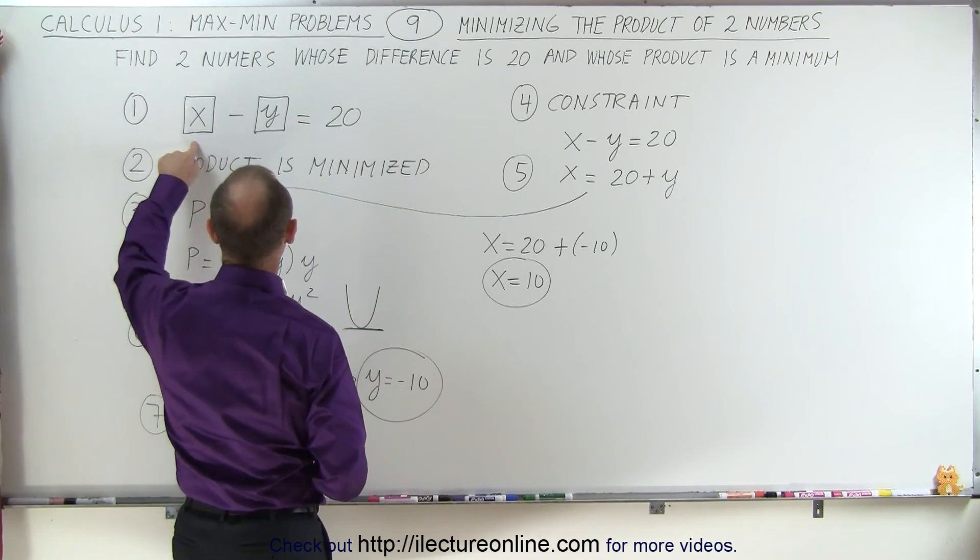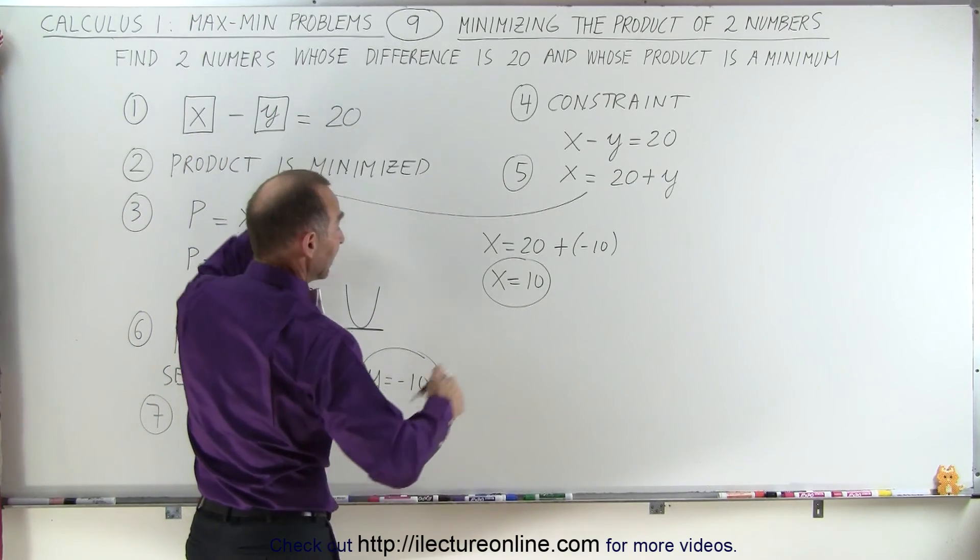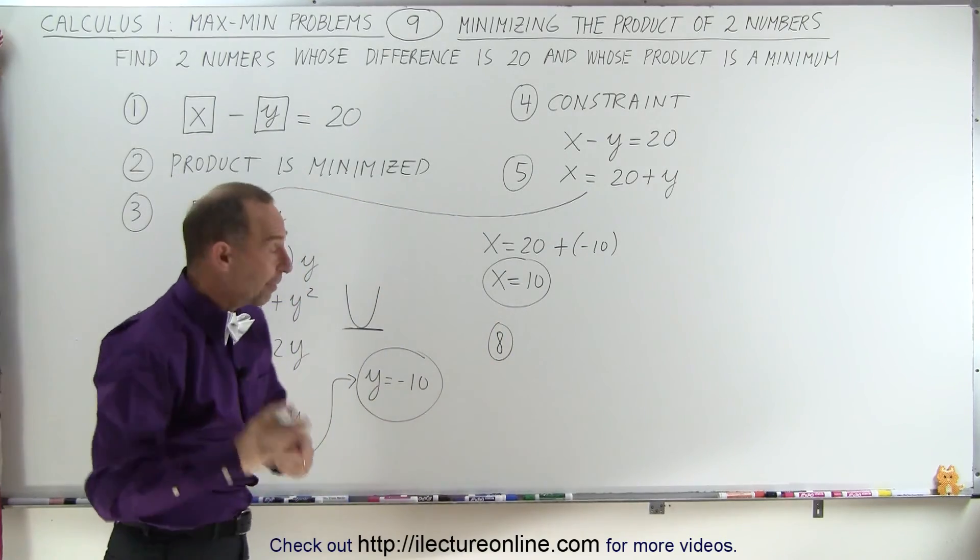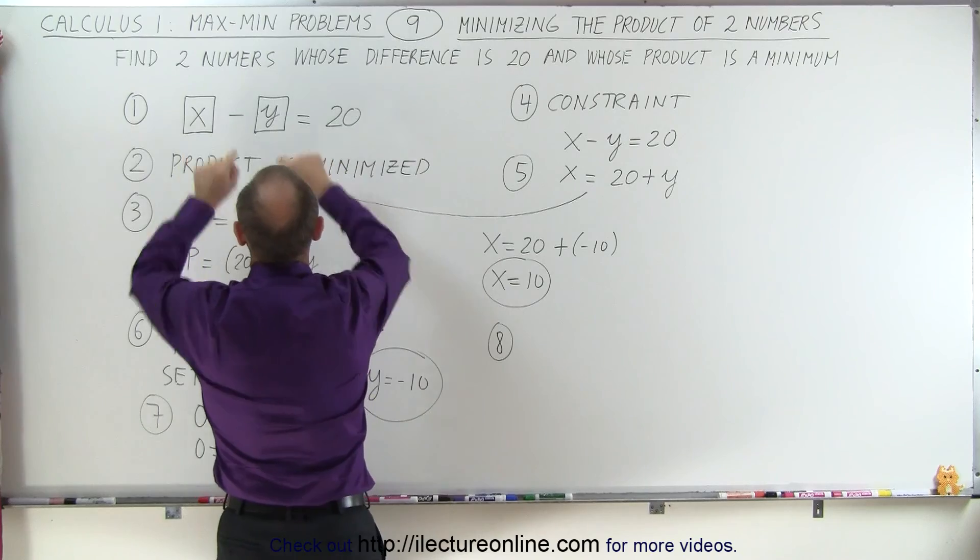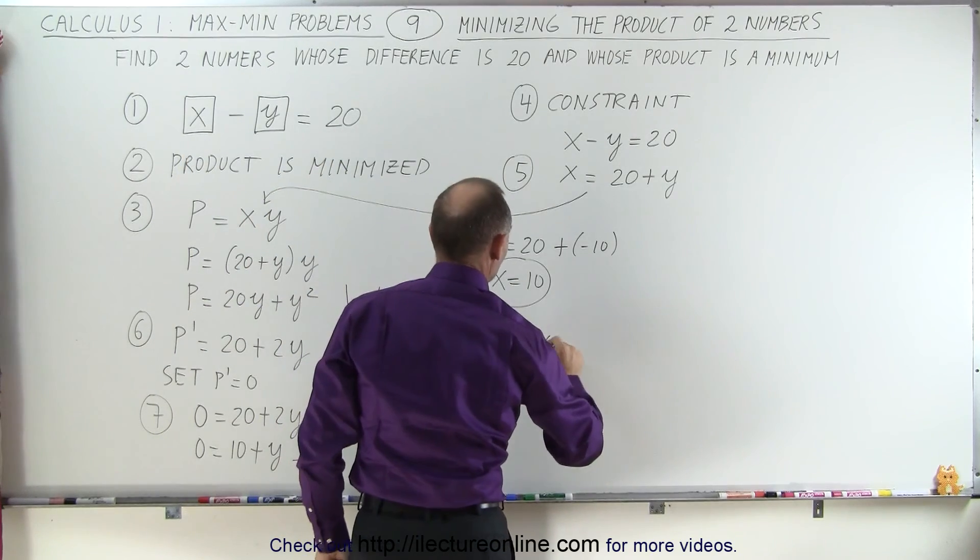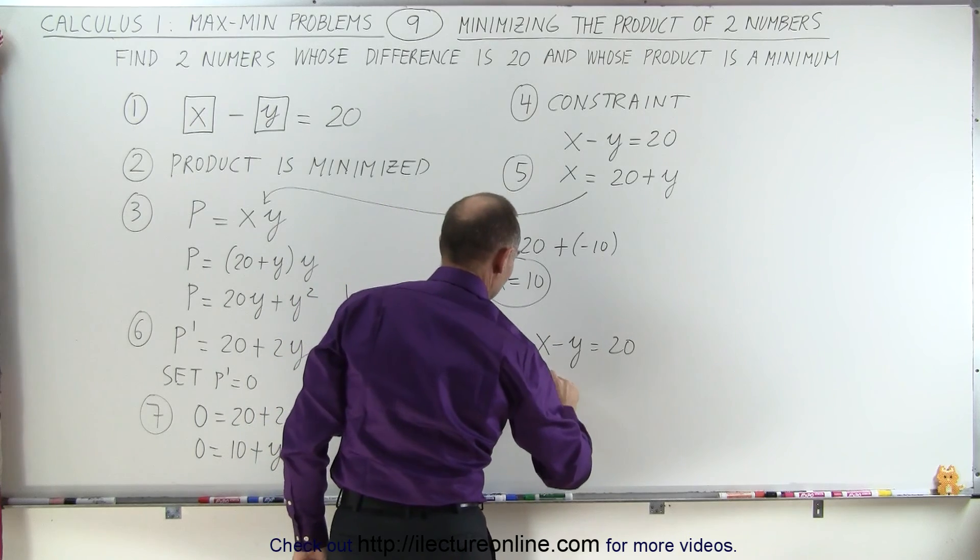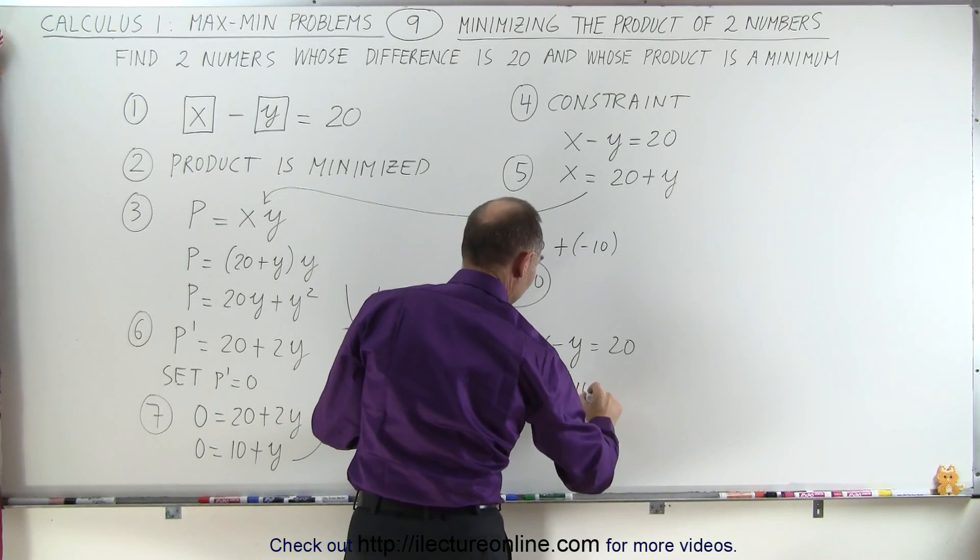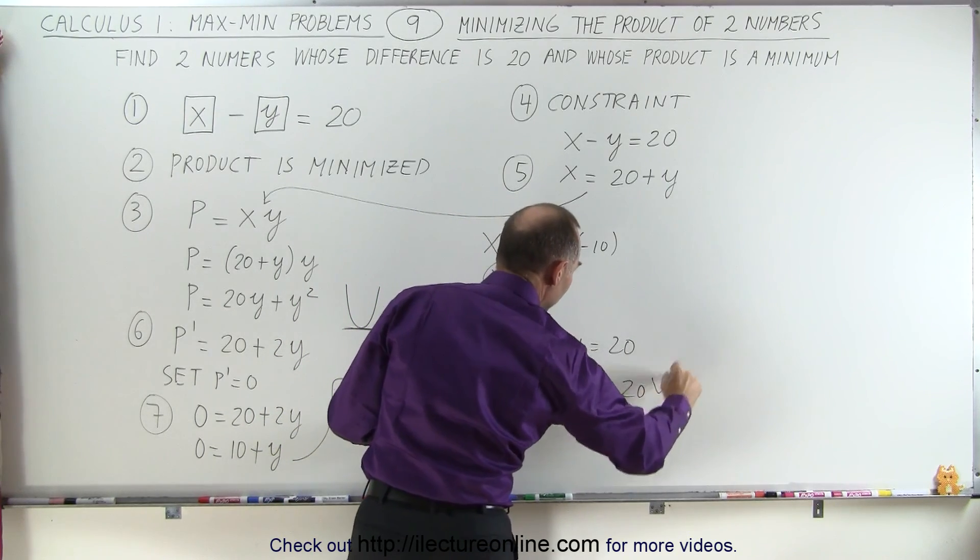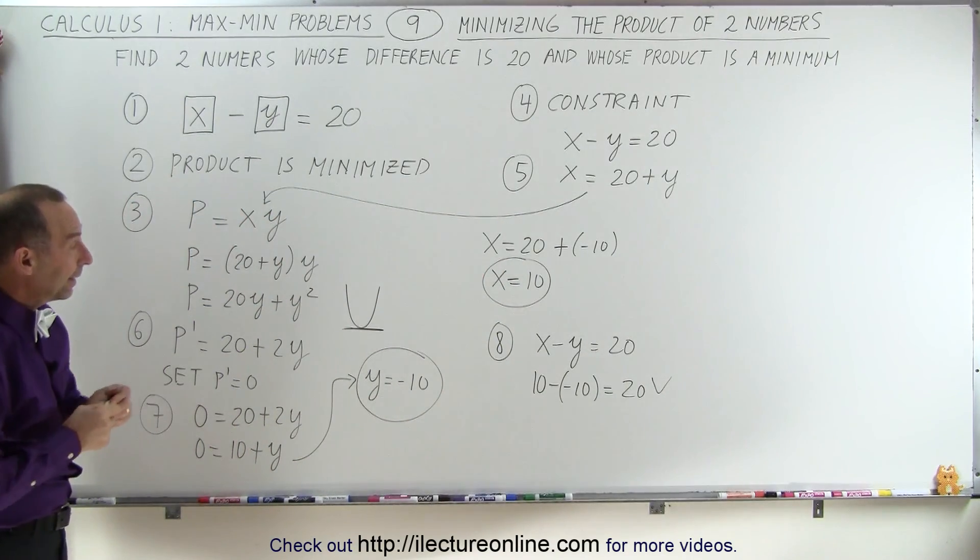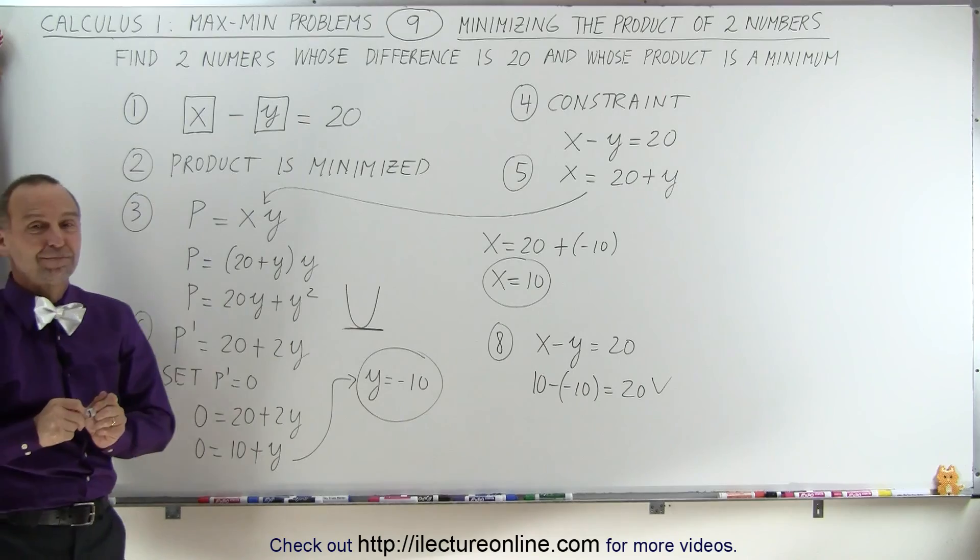Notice the difference, X minus Y is indeed 20, and that is step 8. To make sure that we did this correctly, we're going to verify by plugging those two values back in our constraint. So we have X minus Y equals 20. And since X is 10 and subtract from that a minus 10, that is indeed 20. And so we verified that we've got the right answer. And that is how it's done. Thank you.